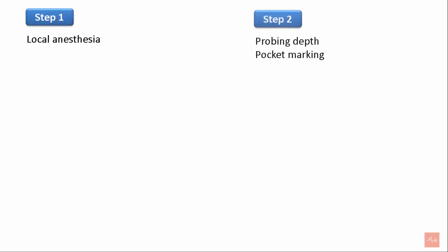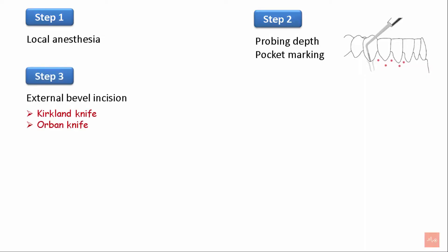The steps in gingivectomy are: Step 1, achieving local anesthesia of the necessary area of treatment. Step 2, probing depth and pocket marking using the Crane-Kaplan pocket marker. Step 3, excision of the tissue using a Kirkland and an Orban knife; alternatively, a number 15 blade can be used. An incision is given apical to the bleeding point at the level between the base of the pocket and the crest of the alveolar bone — this is the external bevel incision.